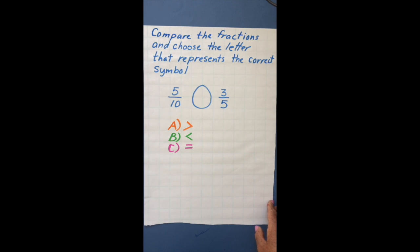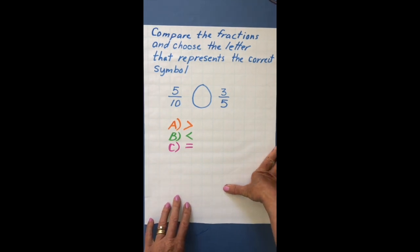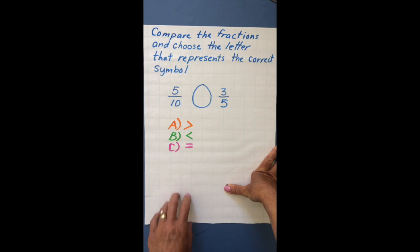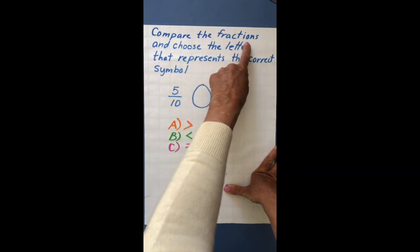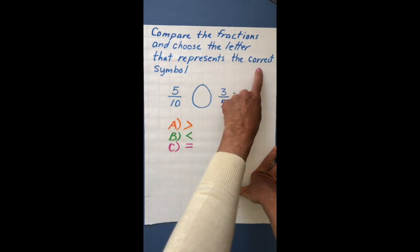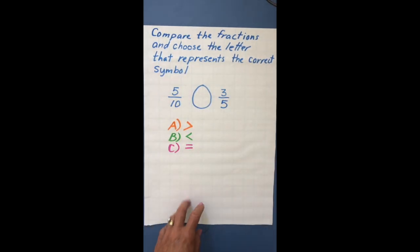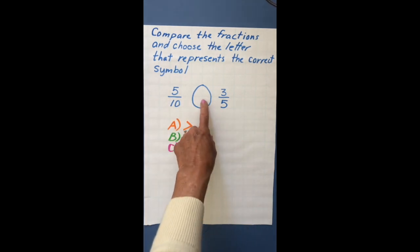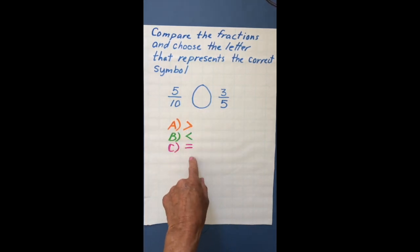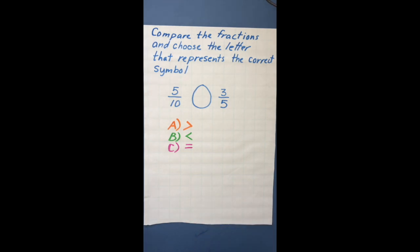Next problem. I'll read the problem, then stop the video and write your answer on a separate piece of paper, and come back when done. It says: compare the fractions and choose the letter that represents the correct symbol. Compare 5 tenths and 3 fifths. Stop the video now.